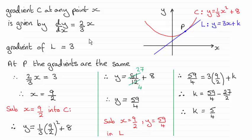So what I've got then is that if I equate these two gradients together, I get the x value at the point P. And it turns out to be 9 over 2. And I can substitute this value of x into equation C to get the corresponding y value.